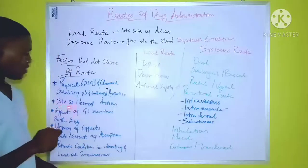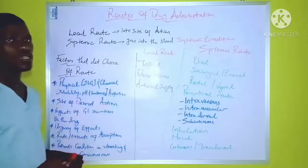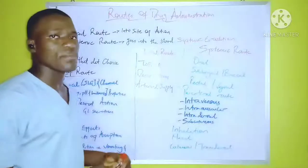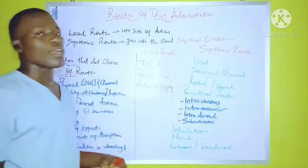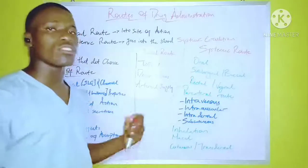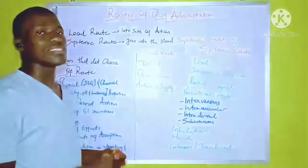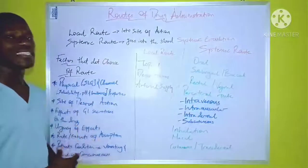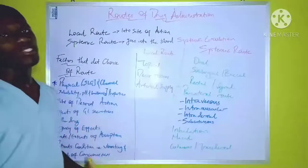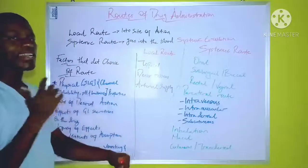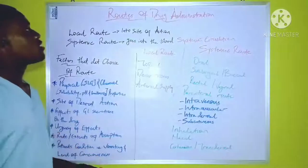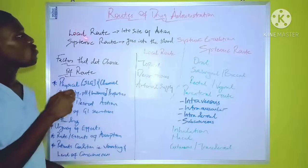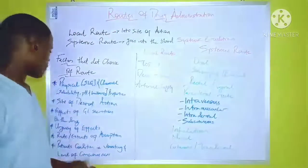The next factor is the site of desired action. The site of desired action will determine the route through which the drug will be administered. For example, if the drug is needed to act only on the skin, the drug might just be administered directly on the skin, which falls under the local route of drug administration.